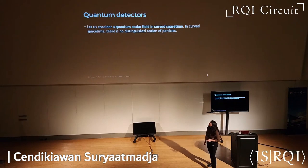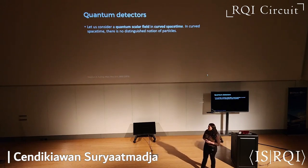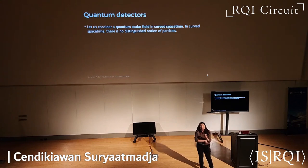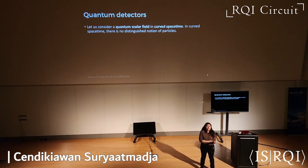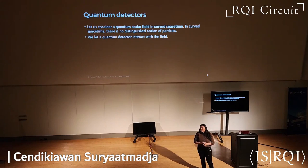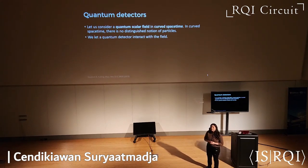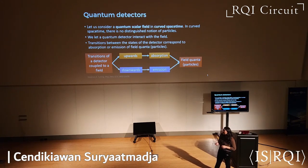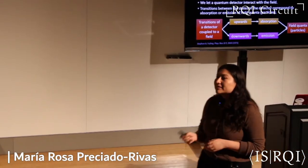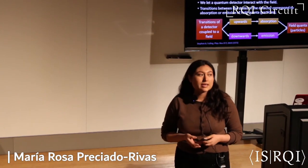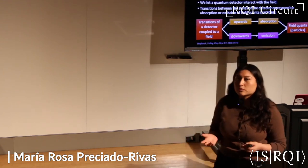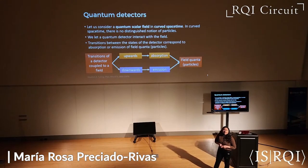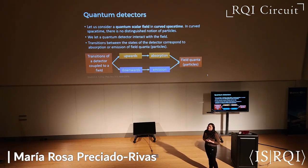Let's consider a quantum scalar field in a curved spacetime. In curved spacetime, and even for non-inertial observers in a flat spacetime, there is no distinguished notion of particles. That is why, in order to probe the physics of the field, we let a quantum detector interact with it. The transitions going on in the detector will correspond to absorption and emission of the field quanta, that is, particles. This is how quantum detectors provide us an operational approach to describe particles in curved spacetime. In other words, we are saying that particles are what particle detectors detect.